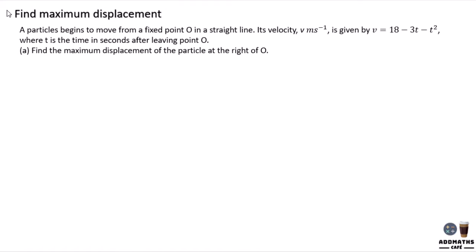Find maximum displacement. Maximum displacement occurs when ds/dt equals zero. When you differentiate displacement and set it equal to zero, you get maximum displacement. Differentiating s gives you v equal to zero. v equal to zero means maximum displacement.